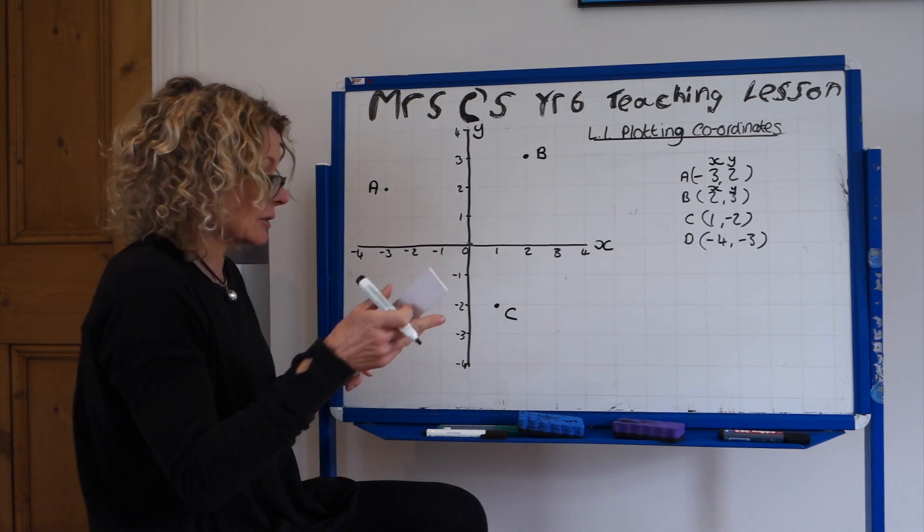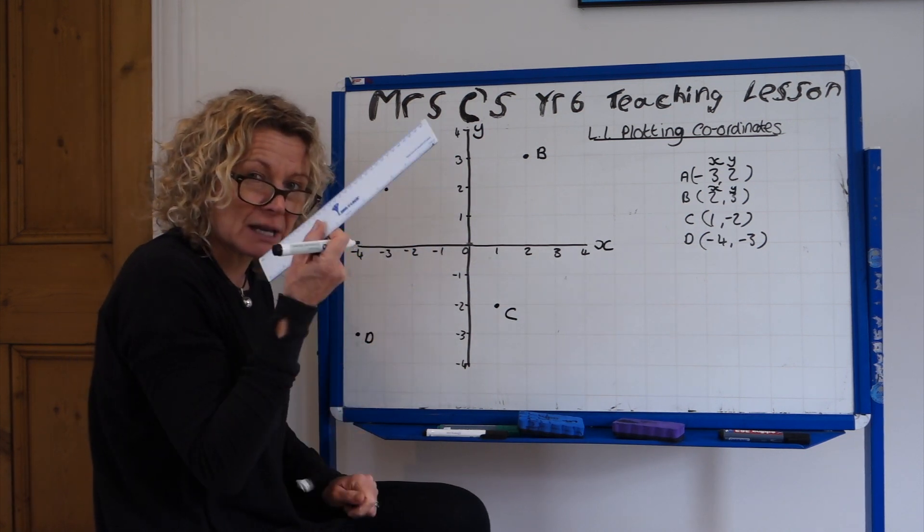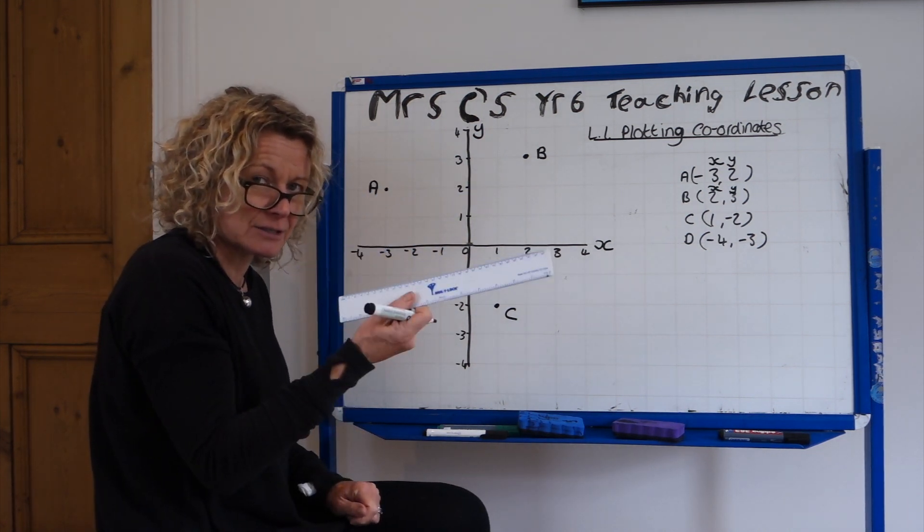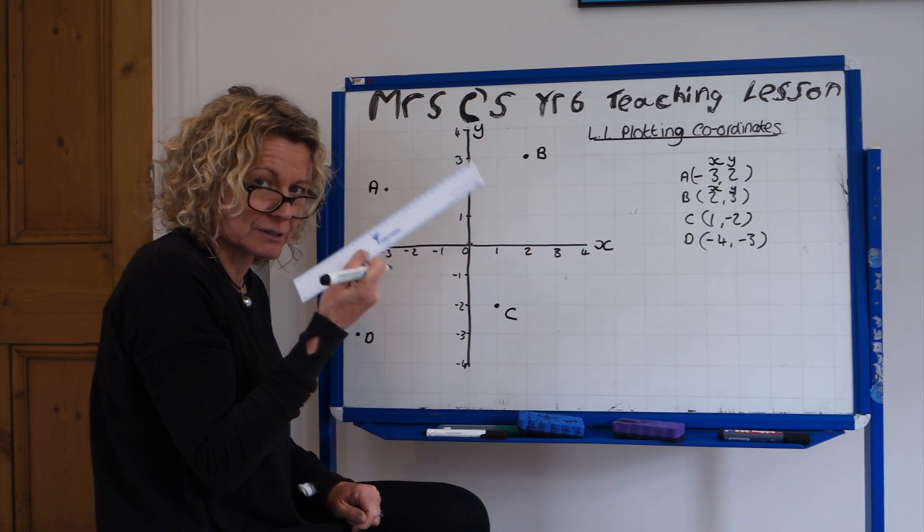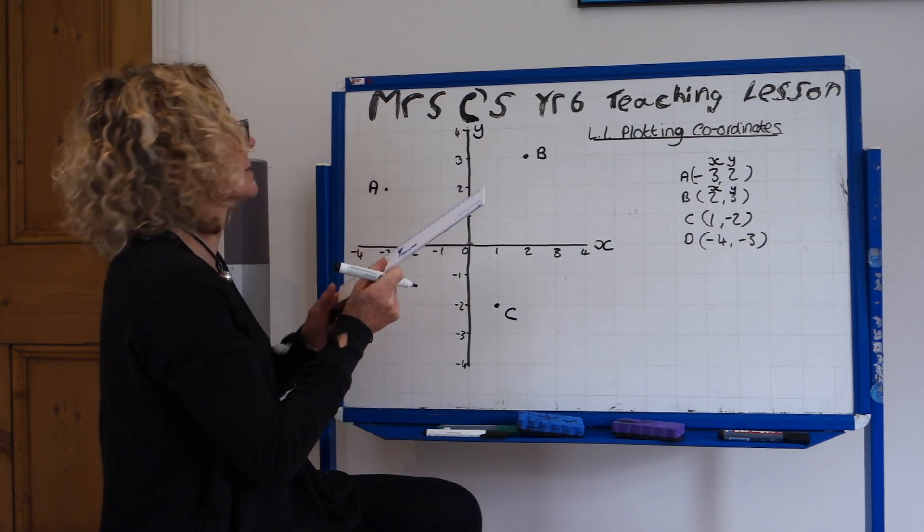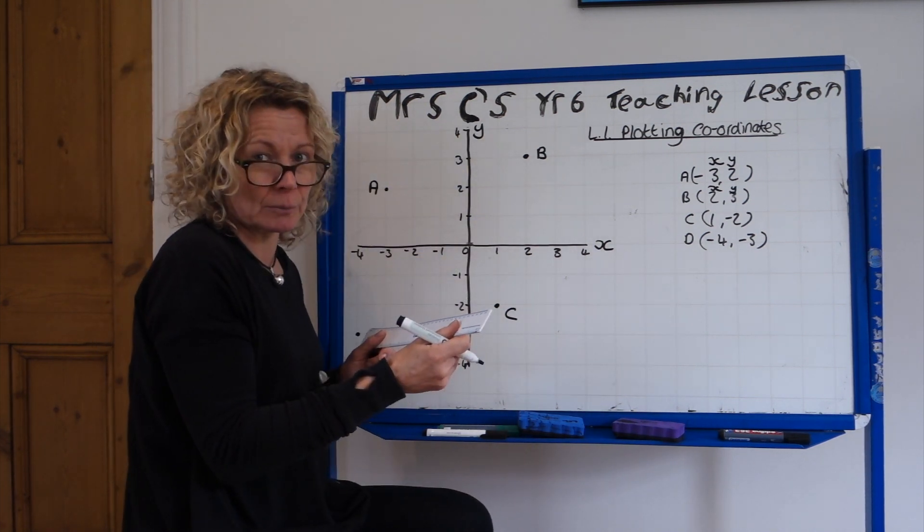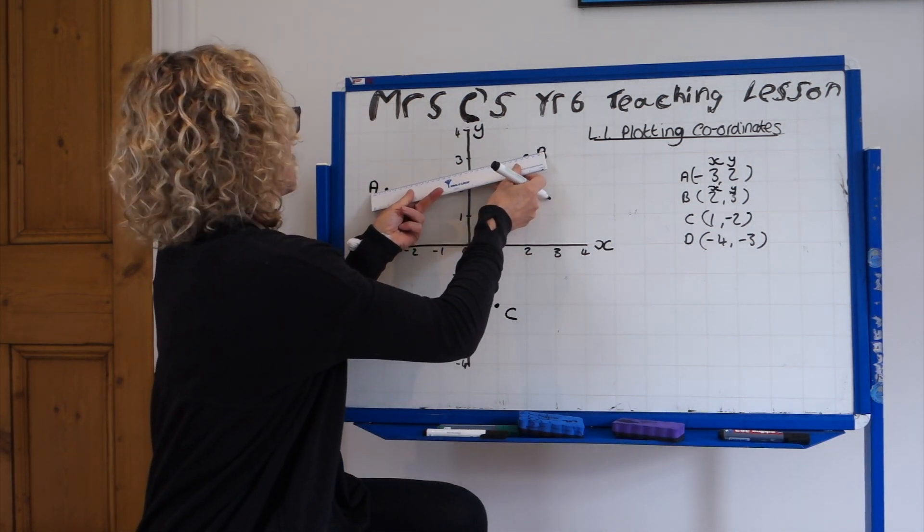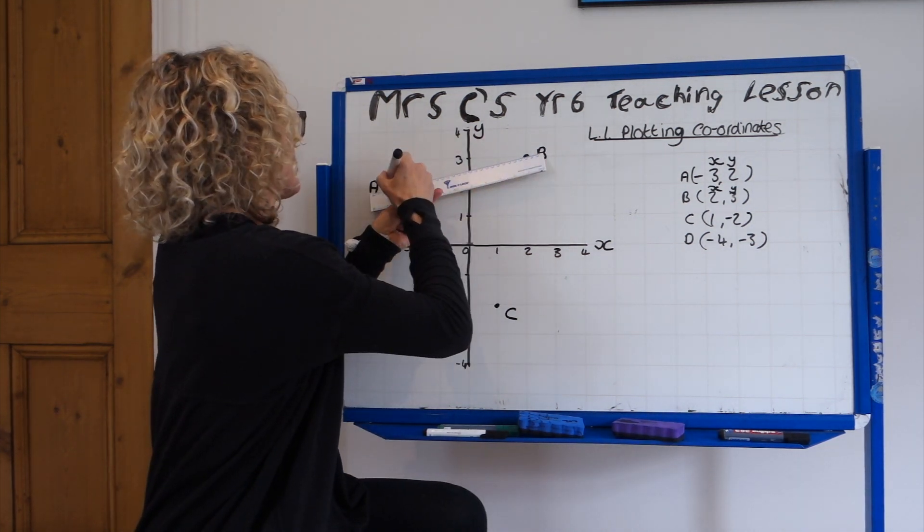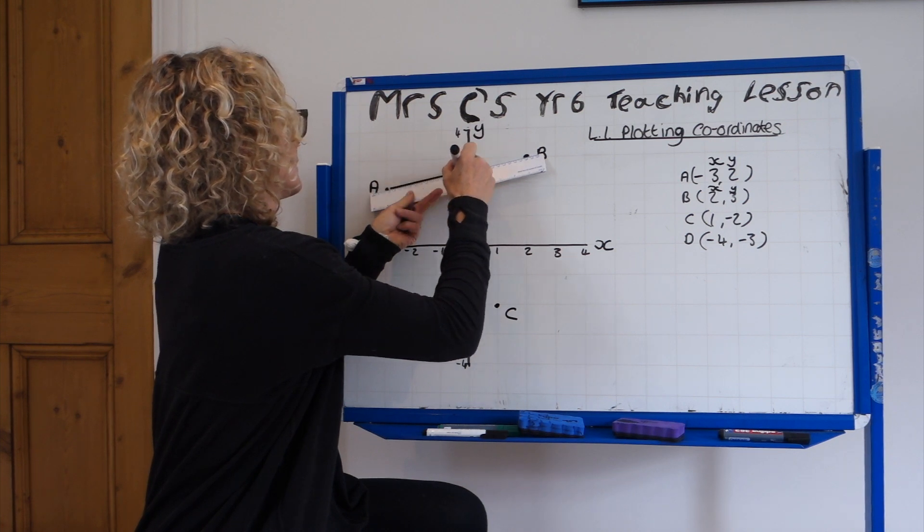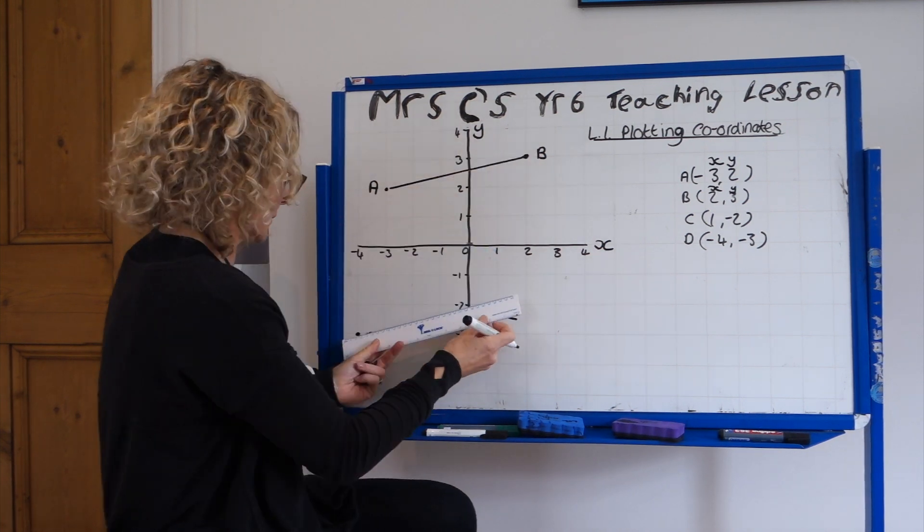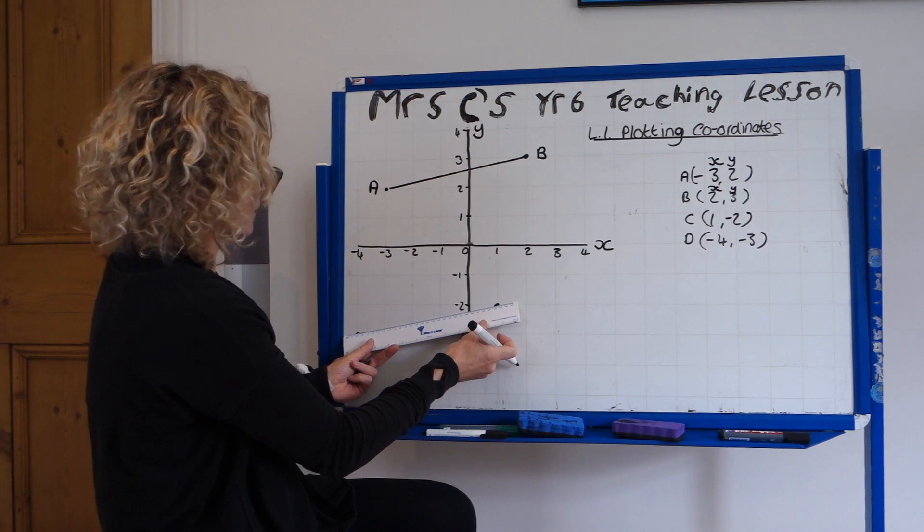So we've not done 2D shape yet, but can you using a ruler please and a pencil, because we always do maths drawings in pencils and with rulers, can you join up these lines? And let's see if we can recognise what 2D shape we have made.